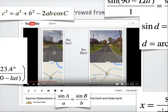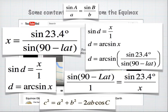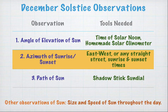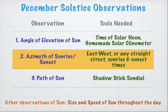This video is going to have a ton of calculations that weren't present in the last one. All you need is an east-west street or a straight street, times of sunrise and sunset, and the data gathering will be very, very simple. The hard part will be the calculations.